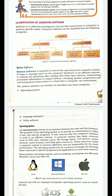System software controls all operations like reading data from input devices, transmitting and processing information to output devices, checking system components, and converting data or instructions into a form that the computer can understand. The operating system takes information from the user, transmits and processes it, and provides the result via the output device. Examples of system software include the operating system, language processor or language translator, and utility software.